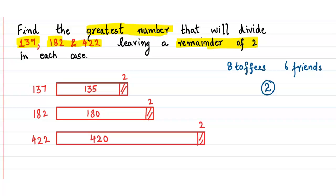After taking away the remainder, that is the extra part, the part of the number that is left can be divided equally. But we have to find a number which is common to all these 3 numbers, so that 135, 180, and 420 can be divided by some number and they are exactly divisible.